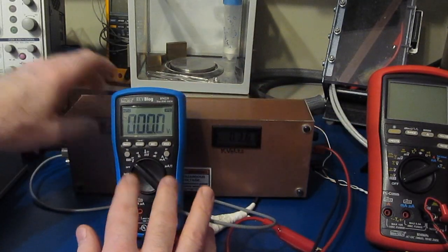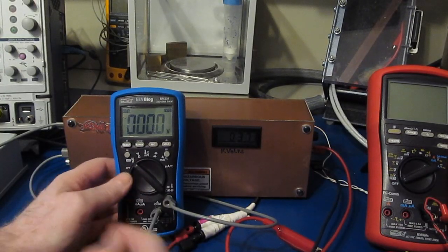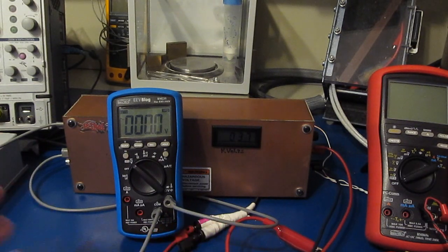So unfortunately with this particular meter we can't apply 2 kV to the input of this. It'll probably damage the MOVs. What we'd like is the MOVs to clip a little bit higher than 2,000 volts.